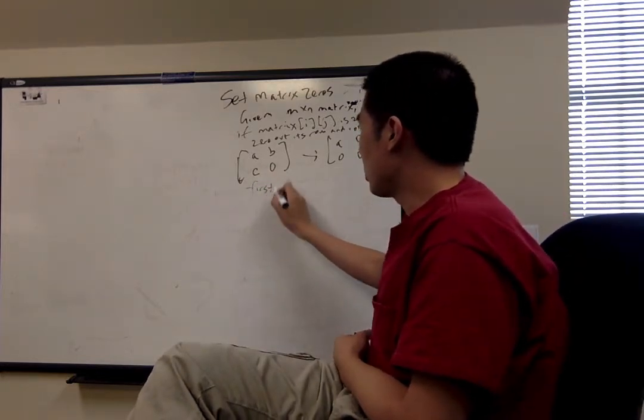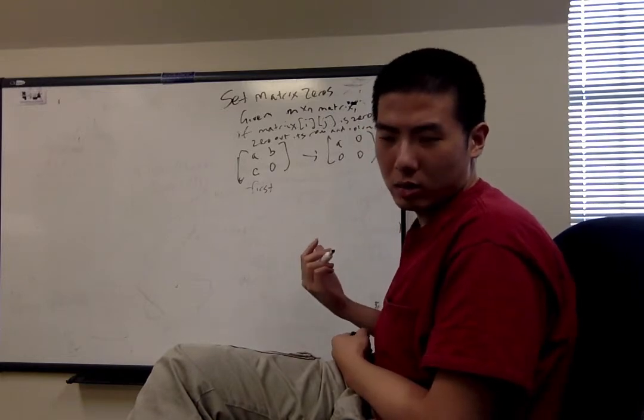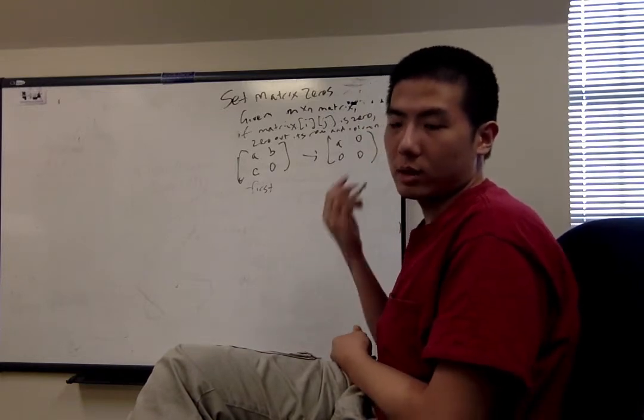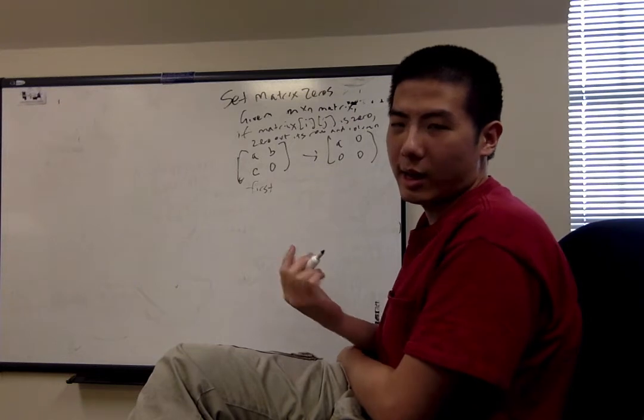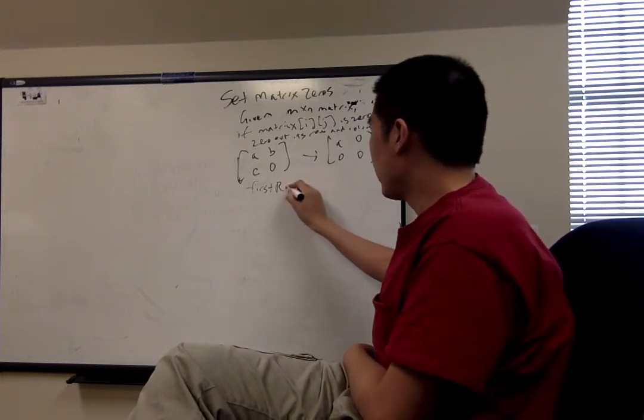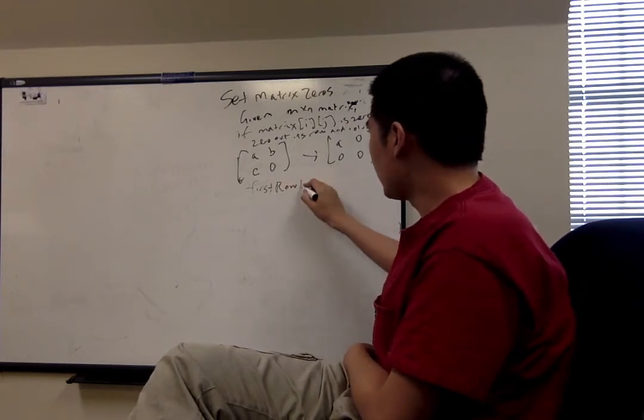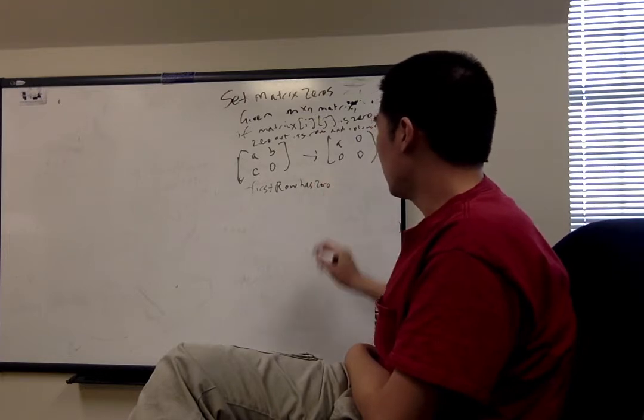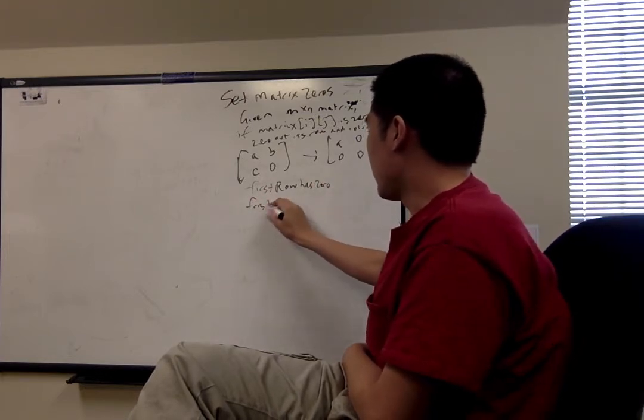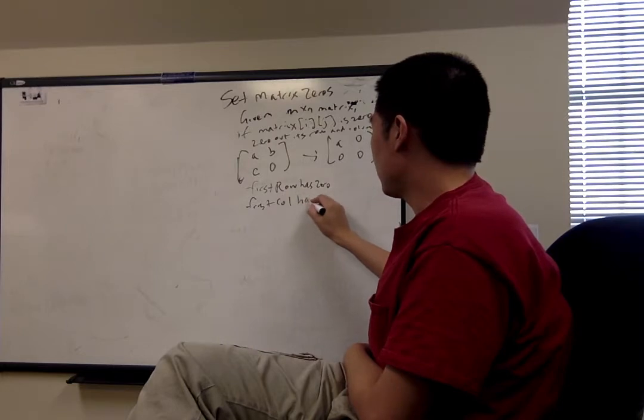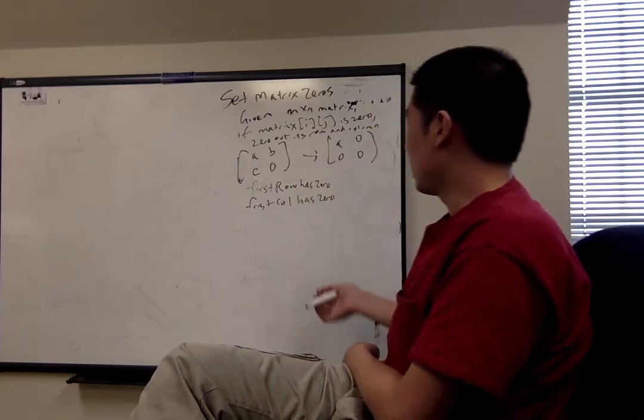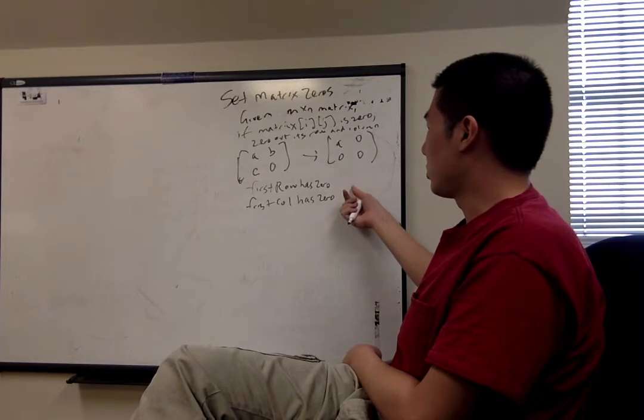So I'm just going to do pseudocode for this one because there's a lot of code to work through, but it's pretty messy and the logic is not that complicated. So firstRowHasZero is going to be this Boolean that is true if and only if there's a zero in the first row.